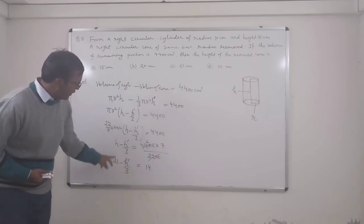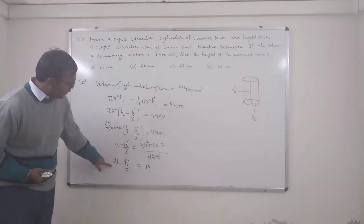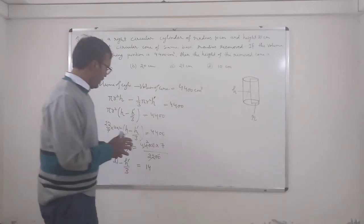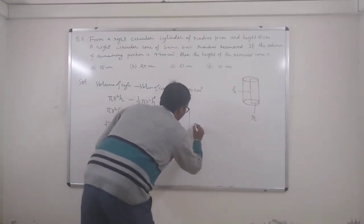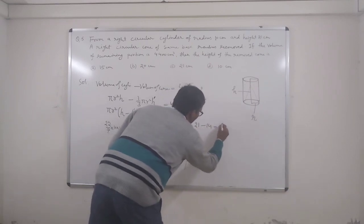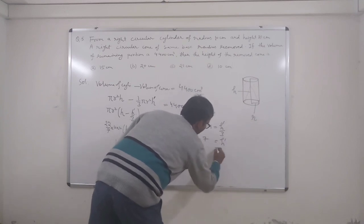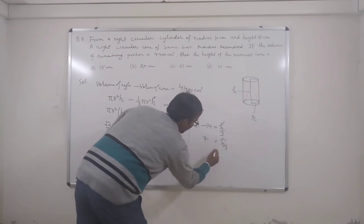Since h is the height of the cylinder which is 21, we get: 21 − h'/3 = 14, so 21 − 14 = h'/3, giving h'/3 = 7, therefore h' = 21.